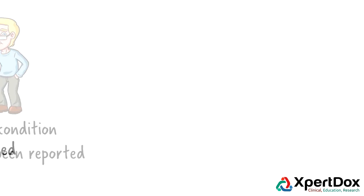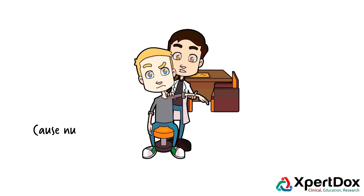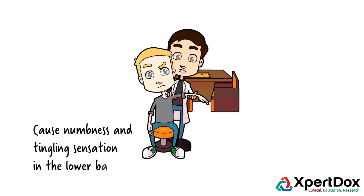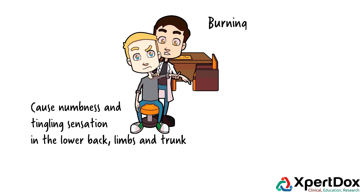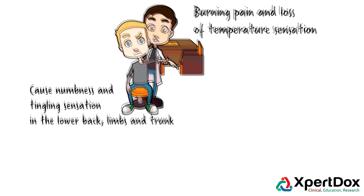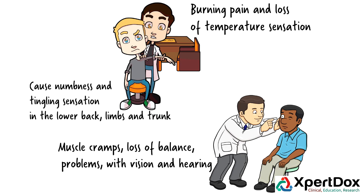Arachnoiditis can cause numbness and tingling sensation in the lower back, limbs, and trunk. It can also lead to burning pain and loss of temperature sensation. Patients may suffer with muscle cramps, loss of balance, and problems with vision and hearing.